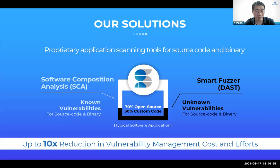As a university spin-off leveraging years of R&D, Scantist is able to provide deep-scan to hunt vulnerabilities in both source code and binaries. Our software composition analysis solution is able to identify known vulnerabilities in a cost-effective manner, while our smart fuzzer is a dynamic approach aimed at fighting unknown vulnerabilities across different architectures and operating systems. As a result, Scantist solutions are able to offer a 10 times reduction in vulnerability management costs and efforts.